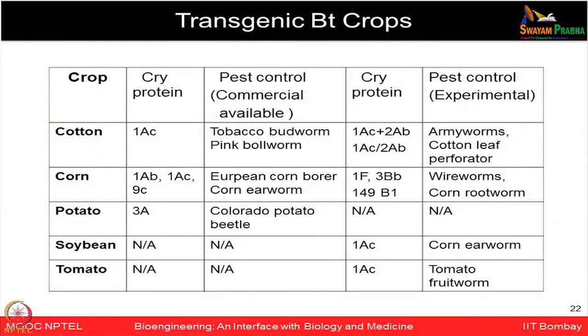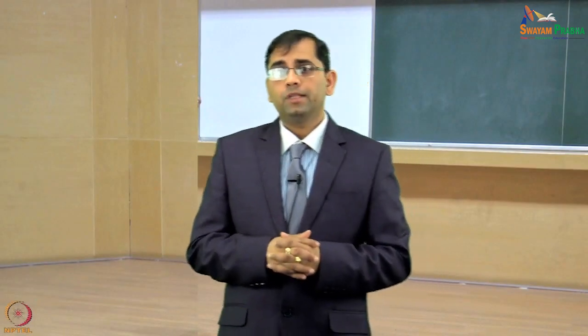There have been many successful examples of transgenic BT crops worldwide, including BT cotton, BT corn, BT potato, BT soybean, and BT tomato — each with different Cry proteins inserted, providing pest control for different types of pests. This area has been truly revolutionary, as large acres of fields where these plants are grown can now be protected from infections, greatly increasing food yield.